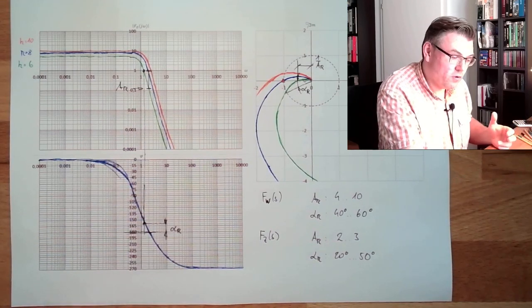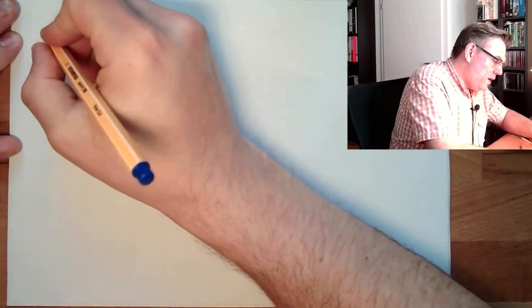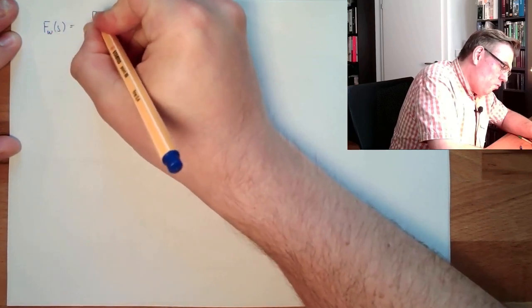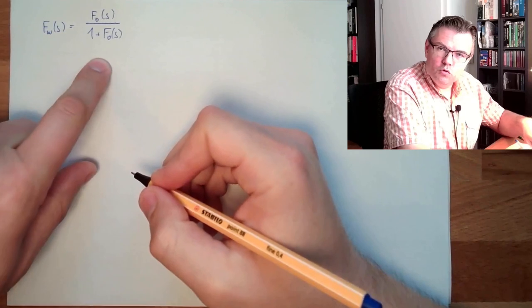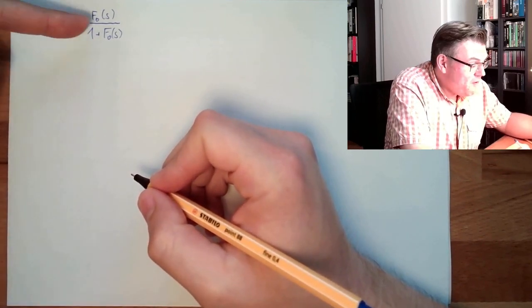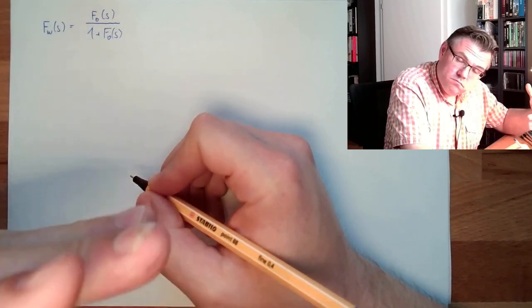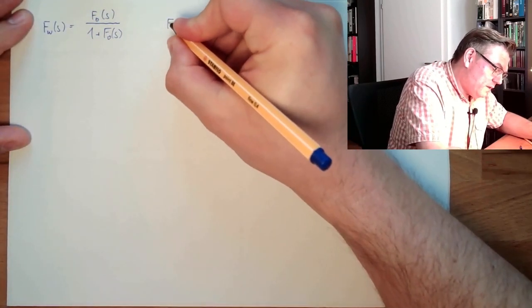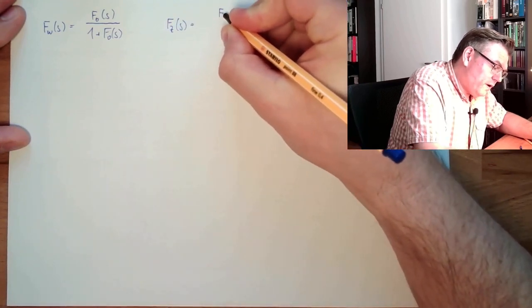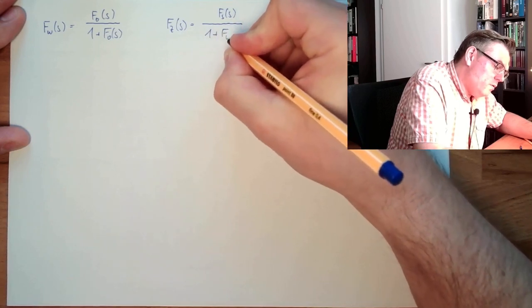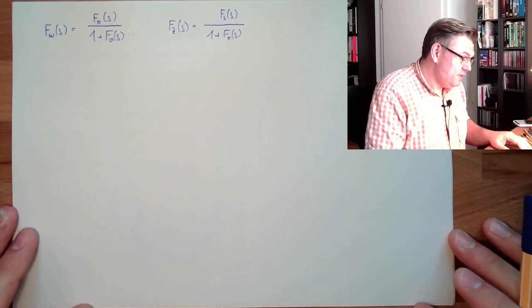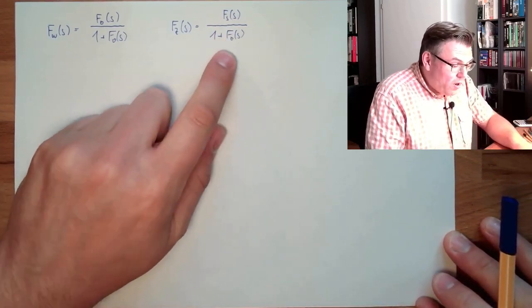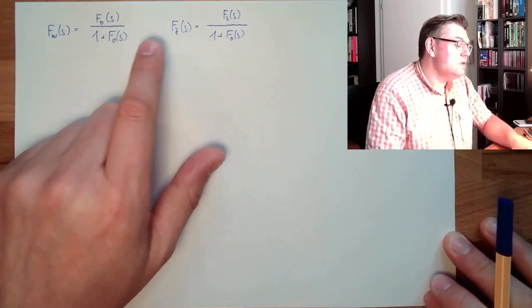Let's remember how our transfer function looked. Our closed-loop transfer function F_W equals F_O divided by one plus F_O. This should be one, and to get close to one, F_O shall be as high as possible. Similarly, the disturbance transfer function is the system transfer function divided by one plus F_O, and this shall be zero — disturbances shall not be visible in the controlled variable. So in both cases, F_O must be large.